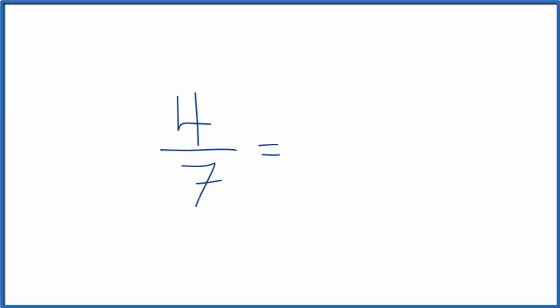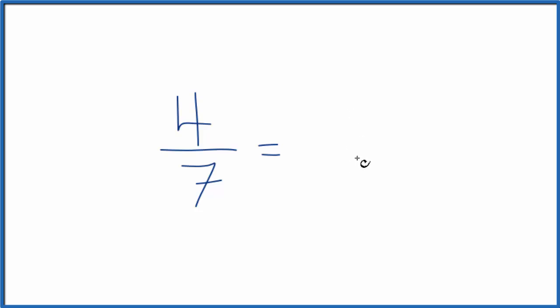Let's take a look at some equivalent fractions for four-sevenths — that's four over seven. What we're trying to do here is figure out another fraction that has a different numerator and denominator, but has the same value.